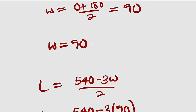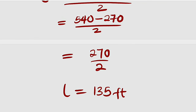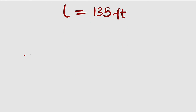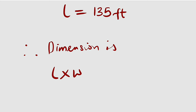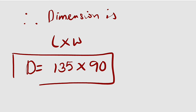While w is 90 feet. What are we looking for? We are looking for the dimensions of that rectangular pen, and therefore the dimensions are length by width: l is 135, and the width is 90. So 135 by 90 is just the dimension. Thank you for watching. Do share with your learning colleagues, and don't forget to subscribe to my YouTube channel for more exciting videos. Bye!